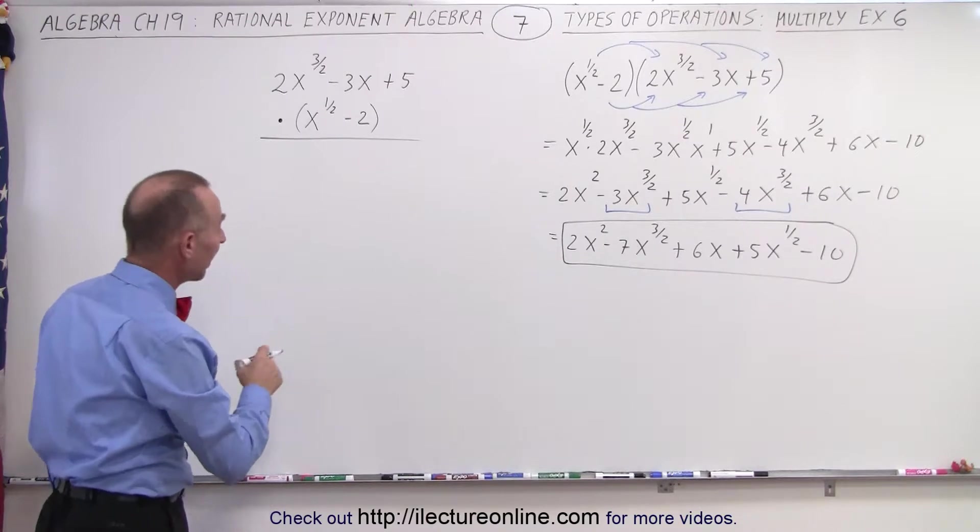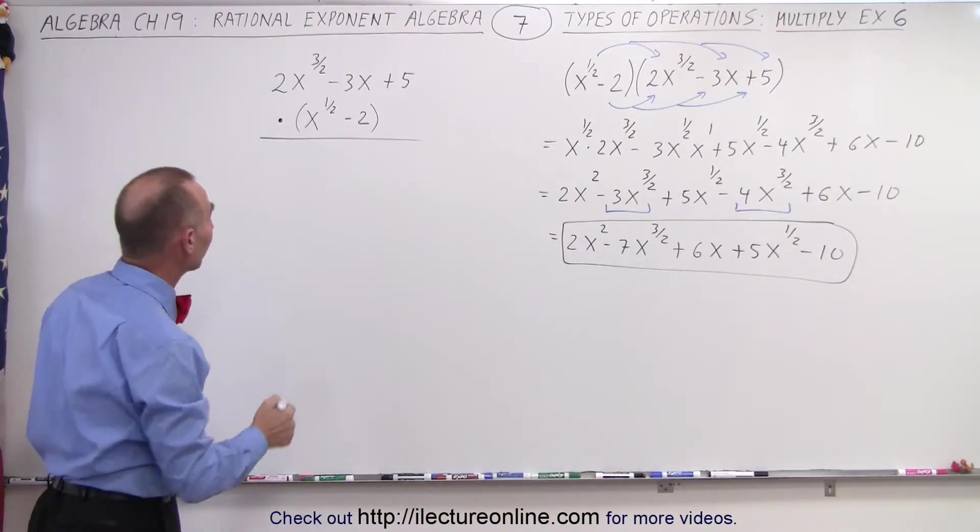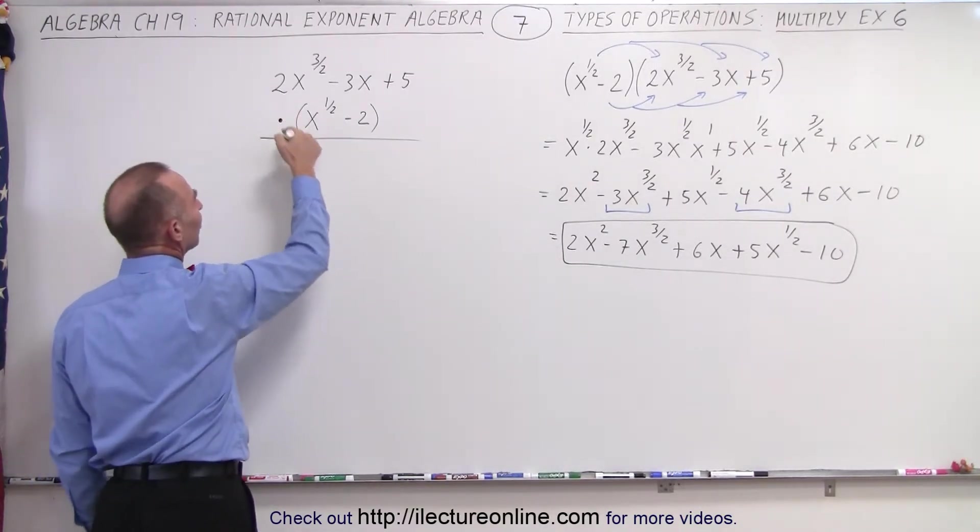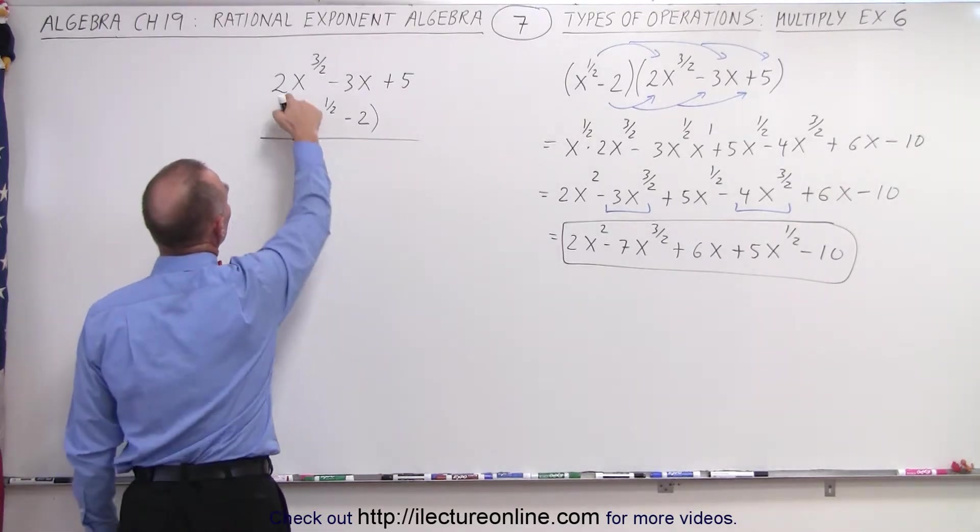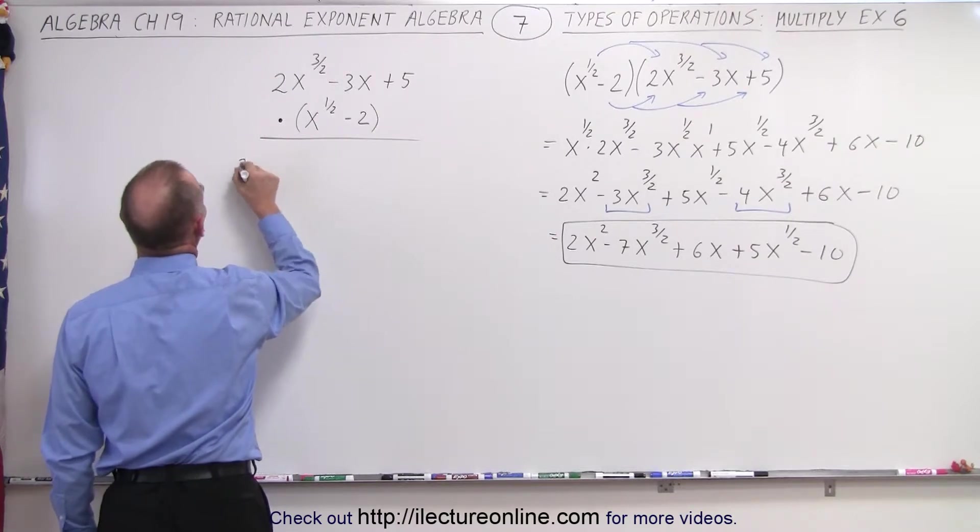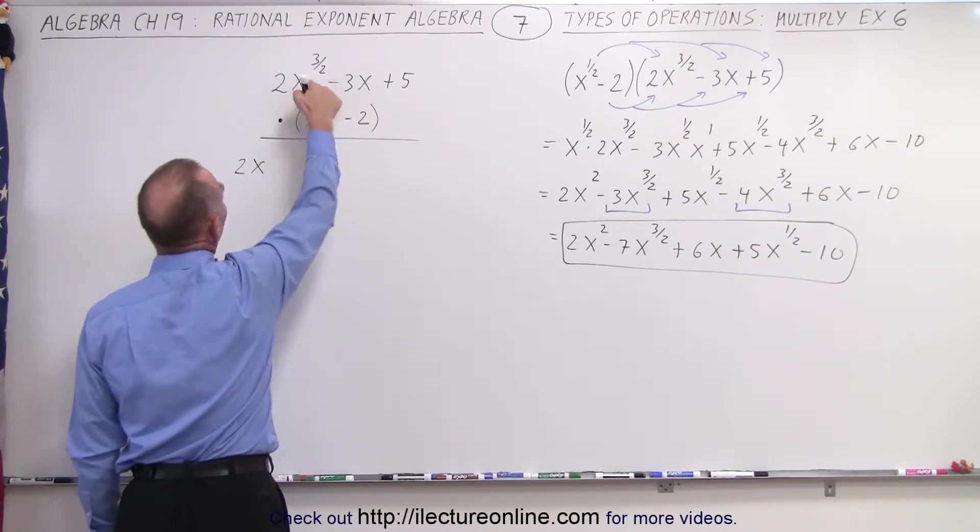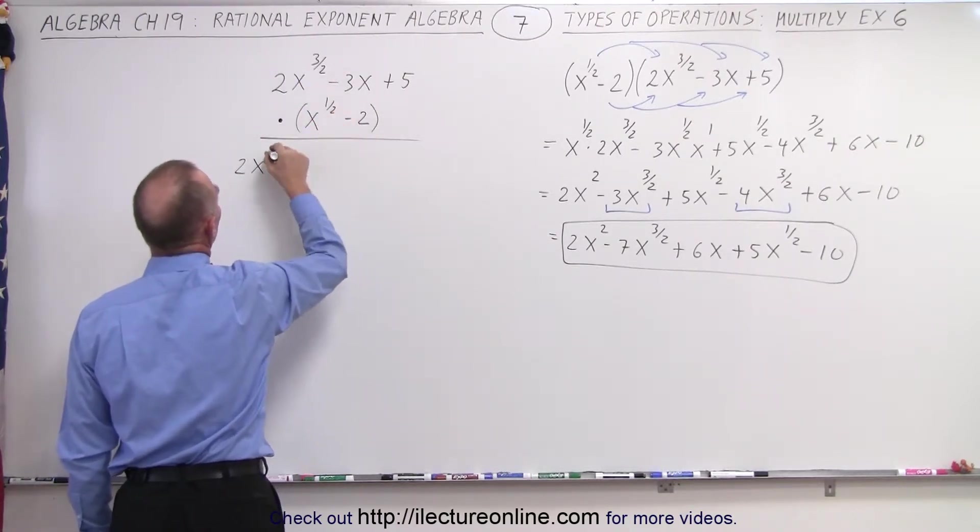Now let's do it this way, and of course we should get the same result. I put a dot instead of multiplication sign, because we have the variable x. I didn't want to confuse the two. So let's multiply this times each of those. So here we get 2x to the 3 halves, plus a half, which is 4 halves, which is 2.